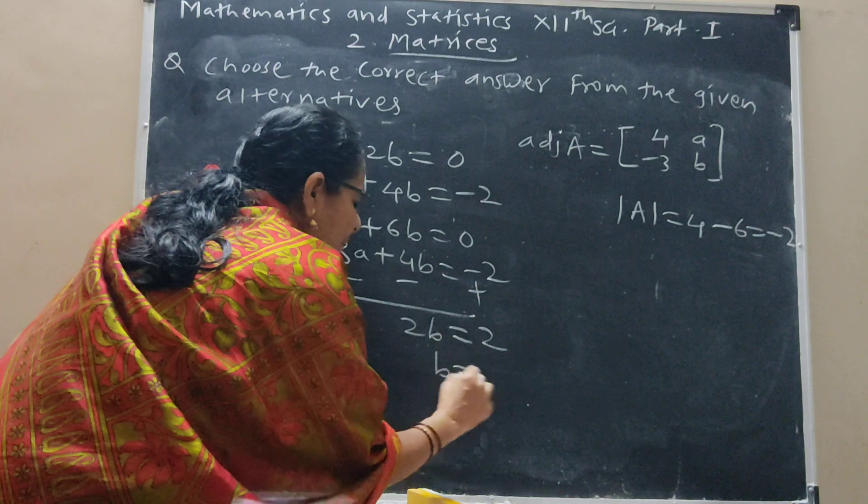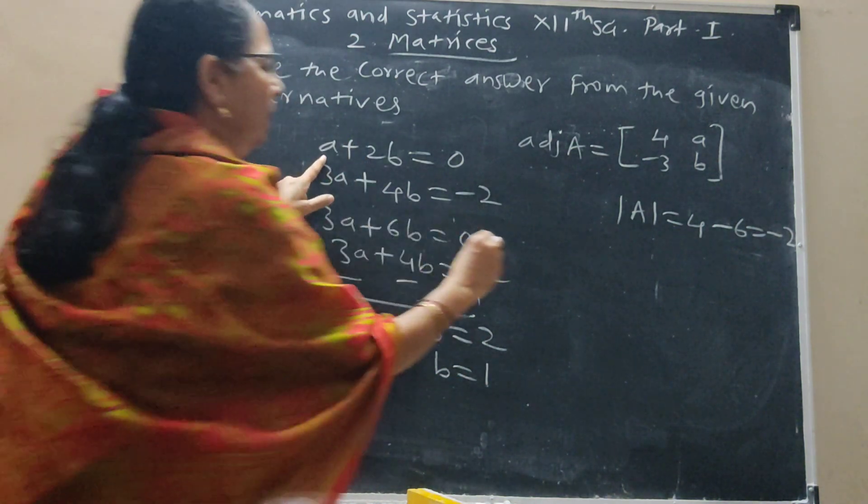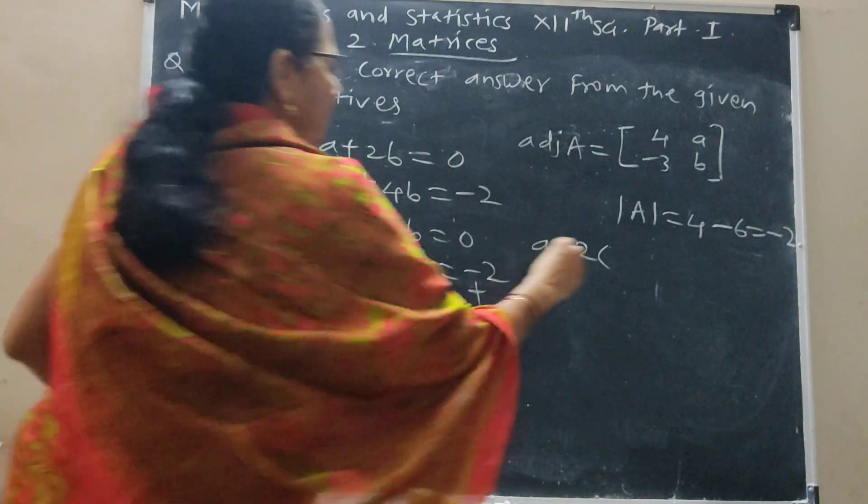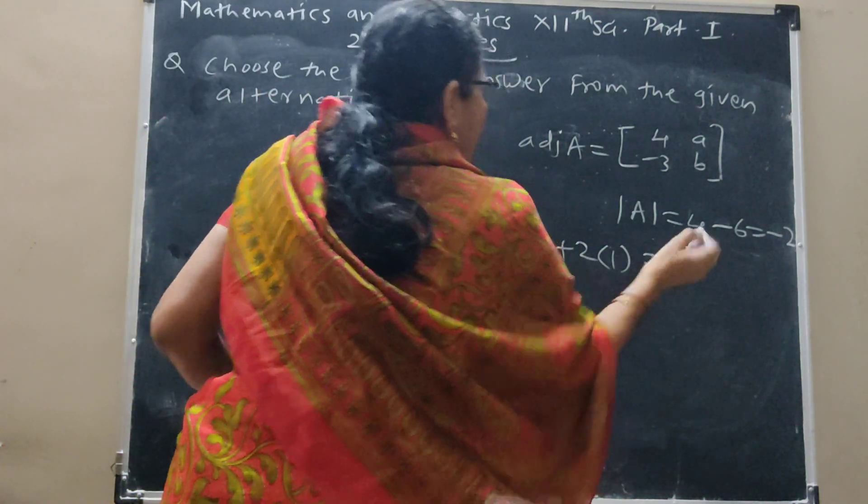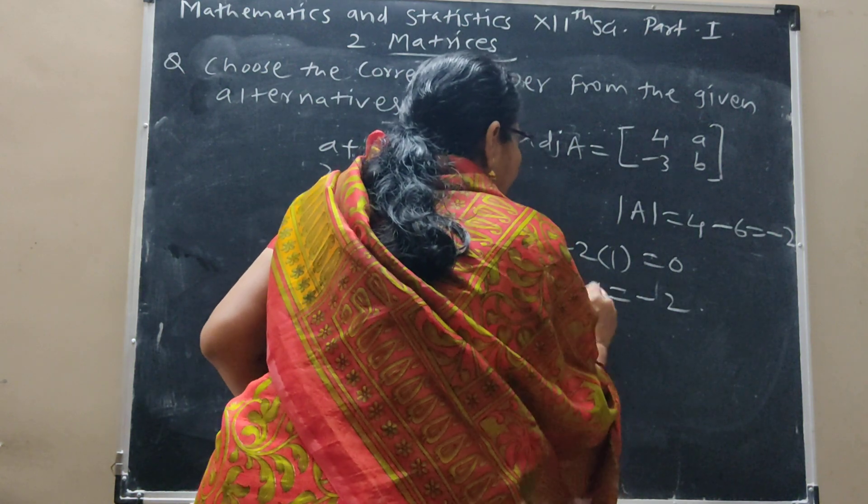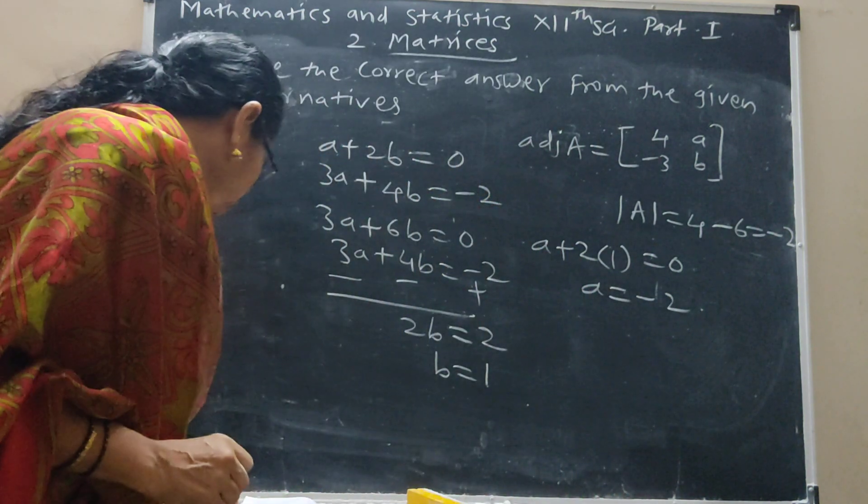We get the value of B is 1. Put value here, so A plus 2 into value of B is 1, is equal to 0. So A is equal to minus 2. A is equal to minus 2, B is equal to 1. This is option A.